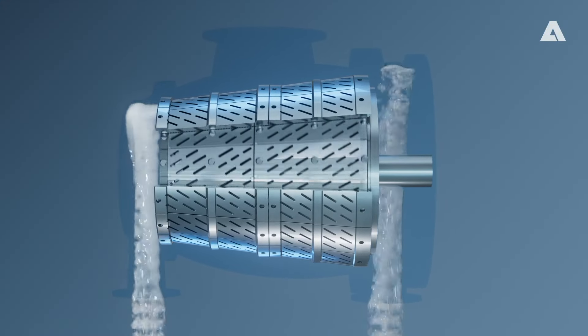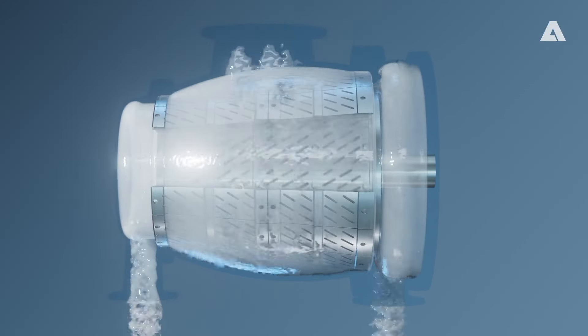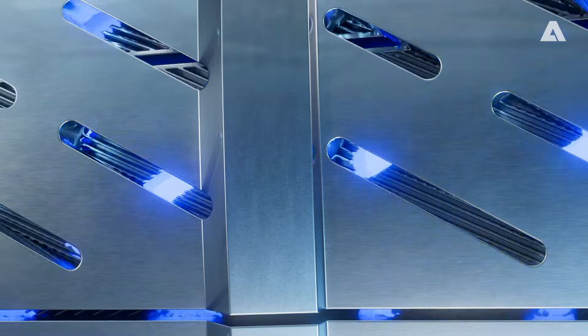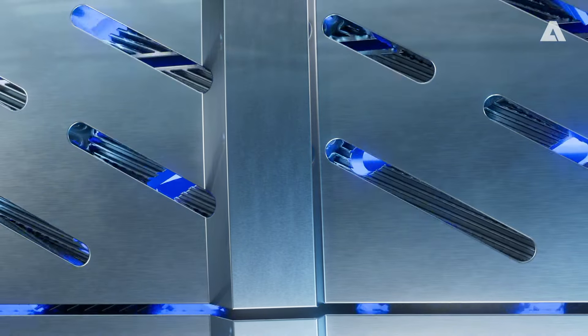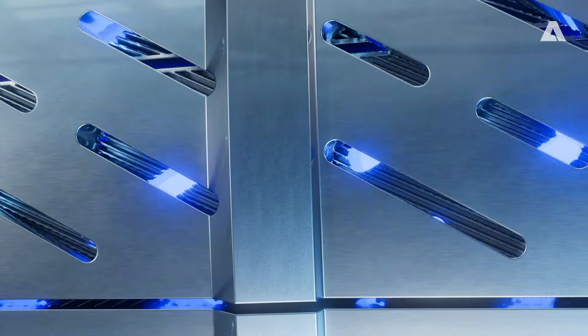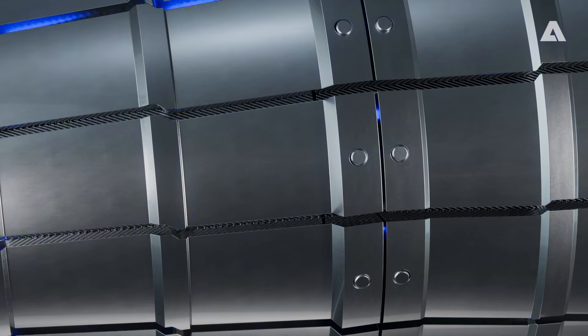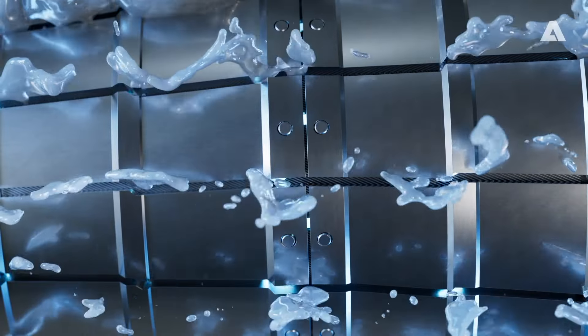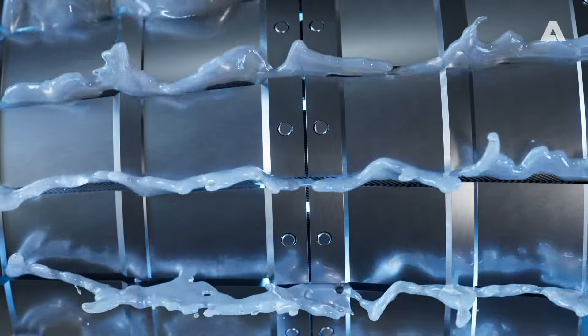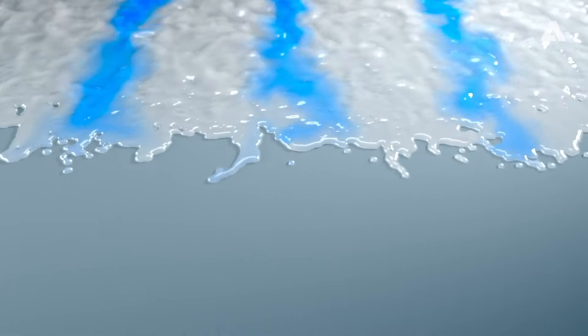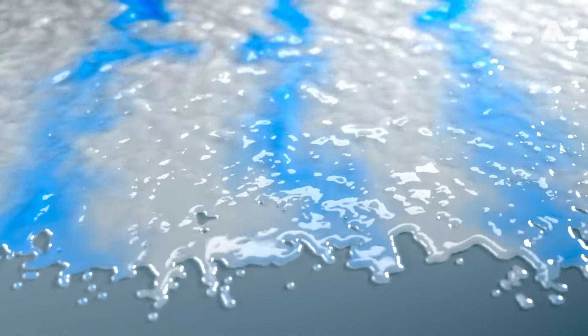Conventional refiner plates often prioritize high flow rates over proper fiber treatment. When the large openings in the rotor and stator segments intersect, or as in other designs the edge gaps of the stator plates line up with the holes in the rotor plates, a significant amount of the fiber is bypassed and untreated. The output stock is an arbitrary mix of refined and unrefined fibers.